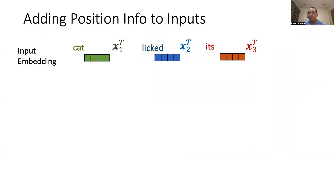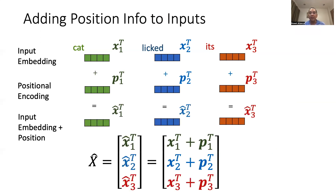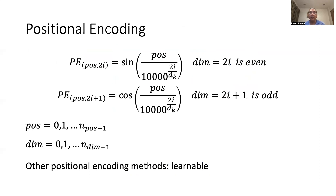One of the weaknesses of transformers — which is also its strength — is the lack of inductive bias, especially with regards to position. Without information about position, transformers may be clueless about which part of the sentence is the noun, the verb, or the direct object. One solution is to include a positional encoding tensor of the same dimension as the input features. This positional embedding is added element-wise to the input feature, resulting in a modified input feature. This is the formula used for positional embedding in the original transformer paper. Other positional encoding methods could also be used, such as learnable embedding.